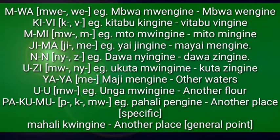Now, an example with the M-Wa class. M-Wa does not simply attach Mw- to give 'Mwingine.' Instead, the I is removed and an E is added because of Swahili transition — how Swahili is evolving. So the I was removed and E-A replaced it. For example, instead of 'Mbu wa Mwingine,' it becomes 'Mbu wa Mwengine.' So we say 'Mtu mwengine,' not 'Mtu mwingine.'